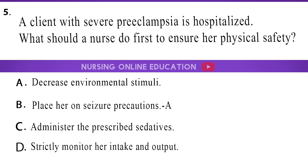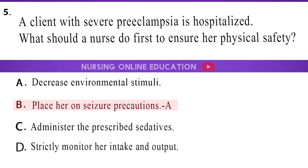Question 5: A client with severe preeclampsia is hospitalized. What should a nurse do first to ensure her physical safety? A. Decrease environmental stimuli. B. Place her on seizure precautions. C. Administer the prescribed sedatives. D. Strictly monitor her intake and output. The answer is option B: Place her on seizure precautions.